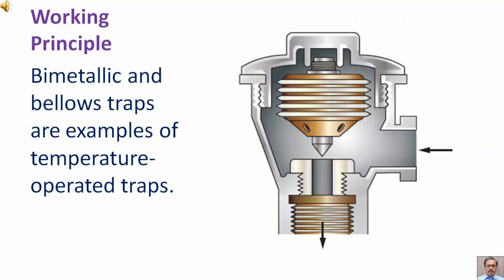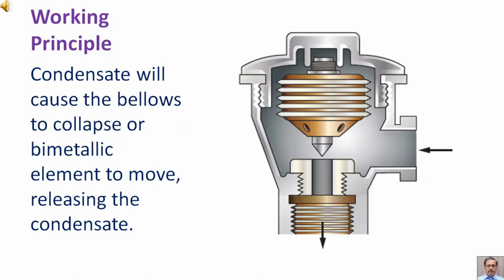Bi-metallic and bellows traps are examples of temperature operated traps. Condensate will cause the bellows to collapse or bi-metallic element to move, releasing the condensate.